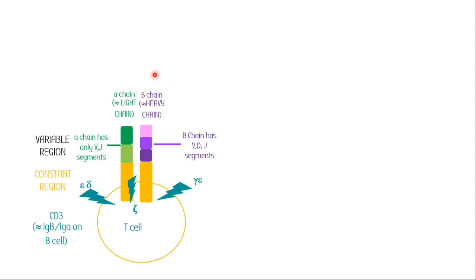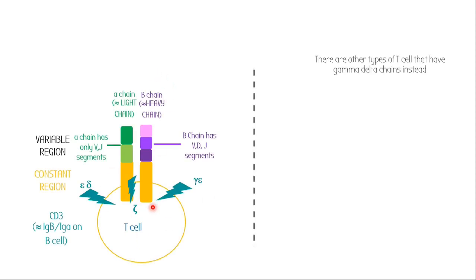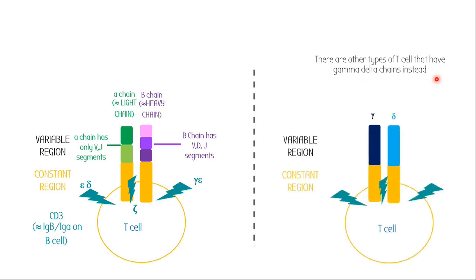T-cell receptors typically have the alpha and beta chain. Just to be extra, there are some T-cells that don't have an alpha-beta chain — they have a gamma-delta chain. That's literally all you need to know about them. They exist, they're extra, they have different names for the chains. Every time I talk about T-cells, I'm talking about the alpha-beta majority — the gamma-delta ones are not really that important.